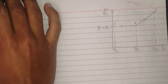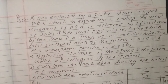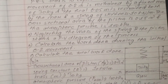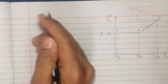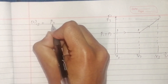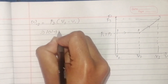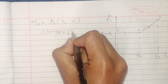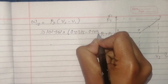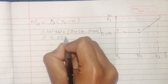Work done W12: using constant pressure formula, W12 = P1 × (V2 - V1) = 101.962 × (0.0375 - 0.0075) = 3.059 kilo Joule.